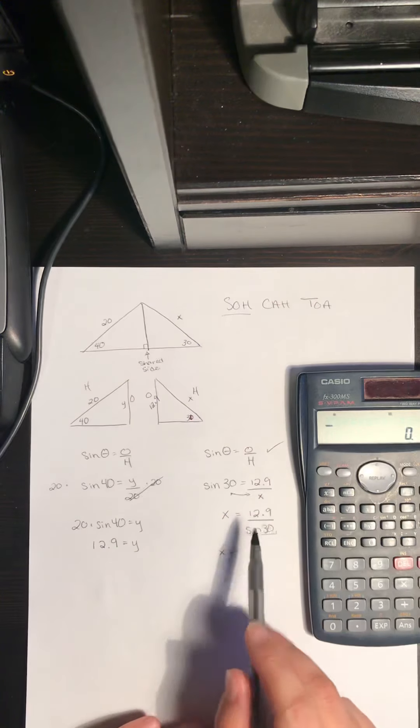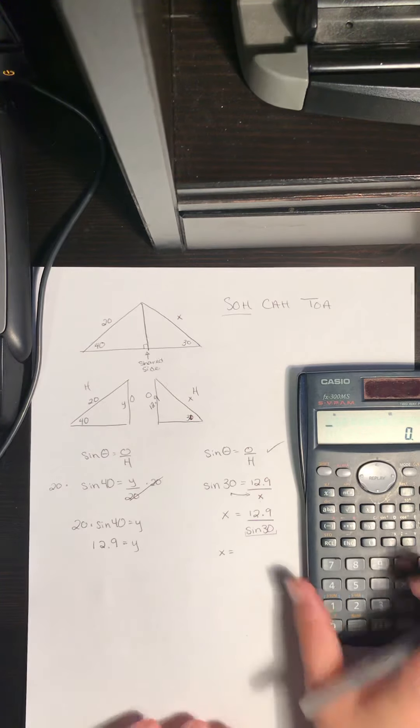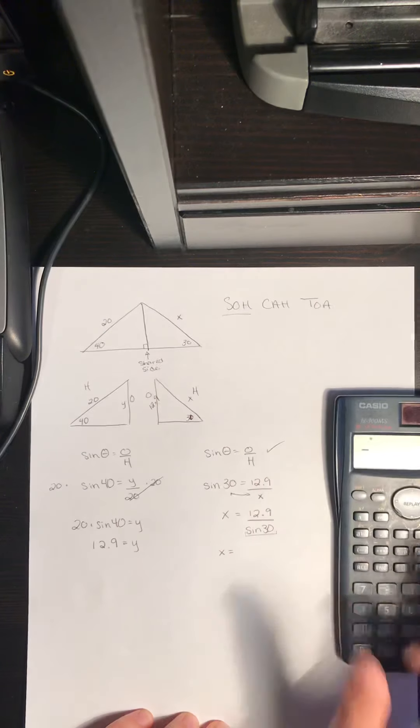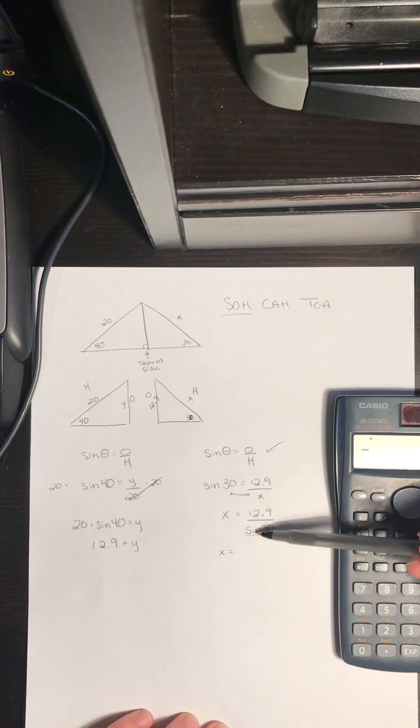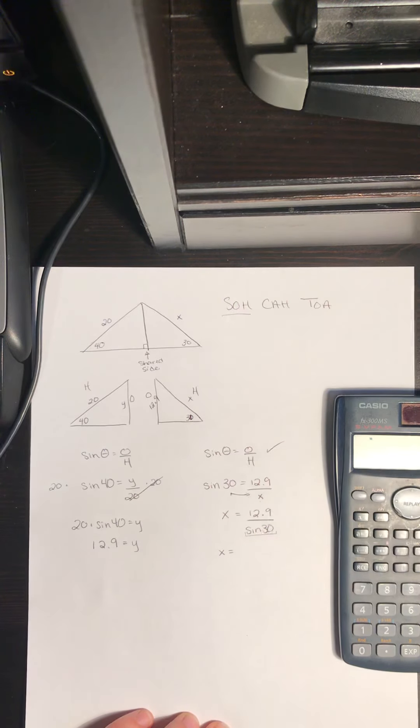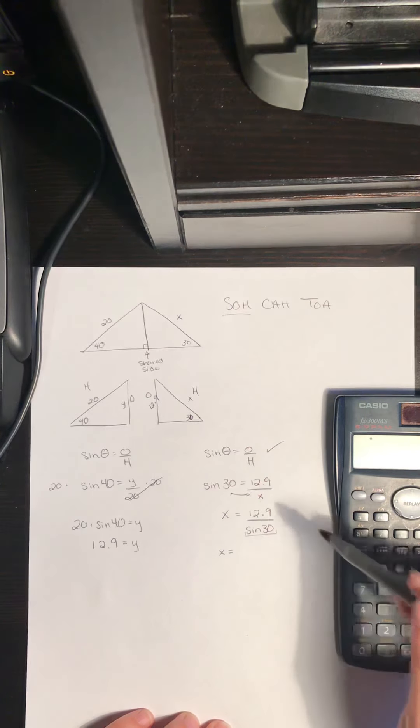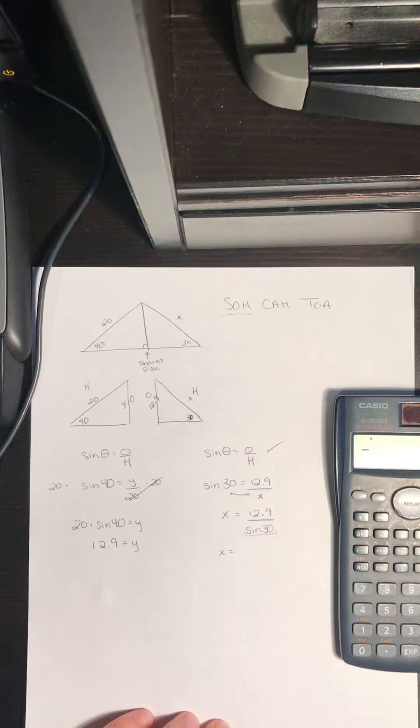So in my calculator, I could just type this all out and it would be fine. If you have a calculator that doesn't let you do that, you have to do 30 sine and then you have to save that number somewhere. So write that decimal out and then do 12.9 divided by the decimal.